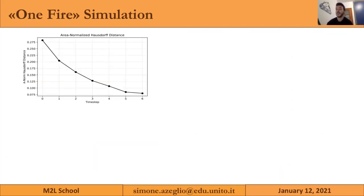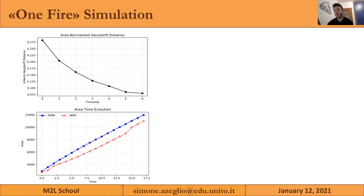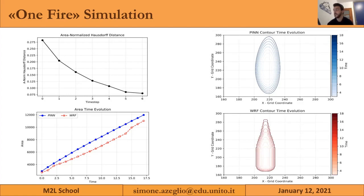What we get is that the surface difference between the two solutions decreases over time — it's converging. The time evolution of the areas is also continuous and straightforward, and they do not diverge over time. The contour-time evolution of the physics-informed neural network is very similar to the WRF model in this case.